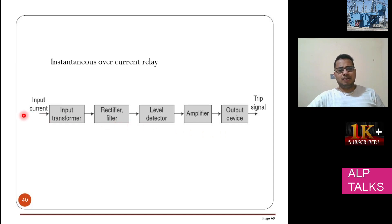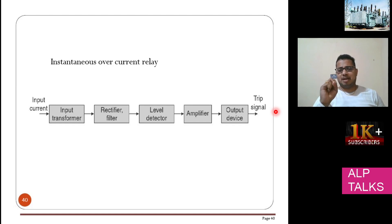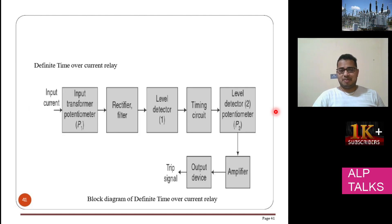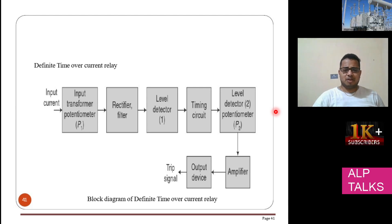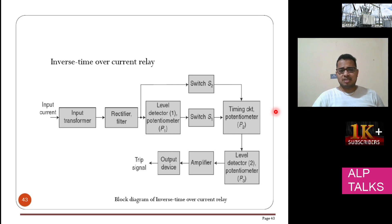For an instantaneous overcurrent relay, the input current is given to a transformer, then passes through a filter, level detector, and amplifier, and the output is used as a trip signal to the circuit breaker. For a definite time overcurrent relay, there is additionally a potentiometer and the equation is RC·log(V − V_T). For an inverse time overcurrent relay, the only addition is one internal feedback path — the remaining circuit is the same.